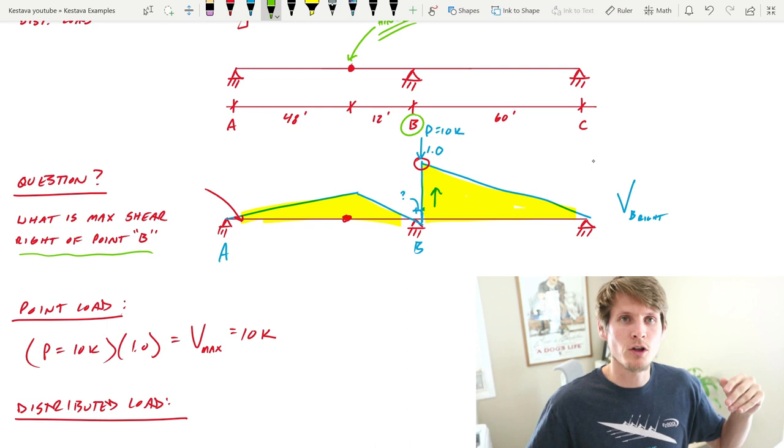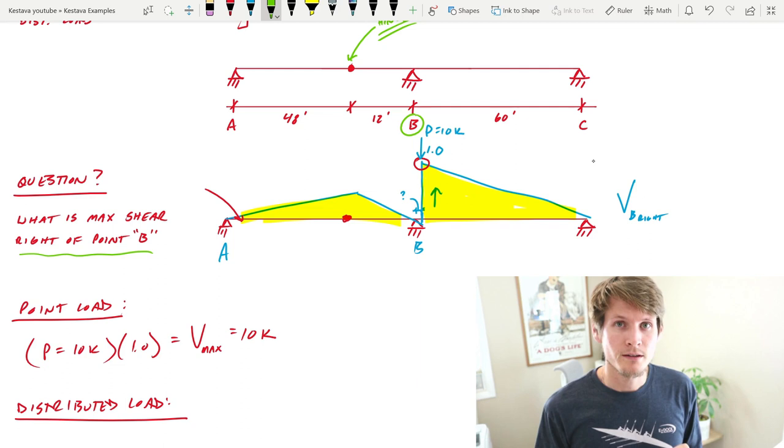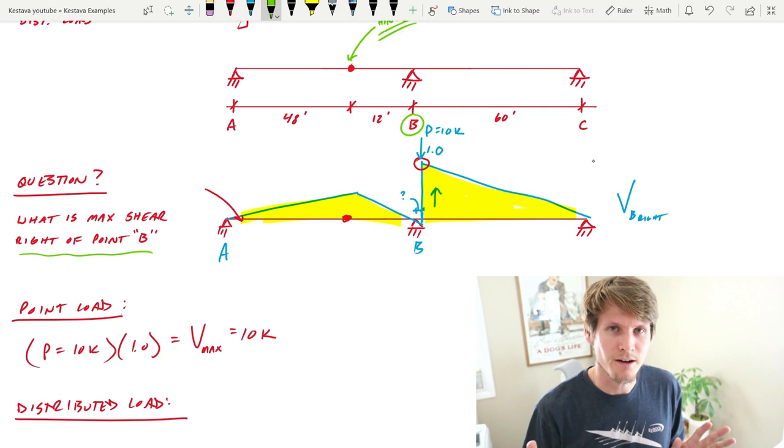That is not always the case. Especially when you have continuous members, you will see that certain bays get loaded that result in maximum shear and other bays do not get loaded. It's not just always that you have everything continuously loaded which gets you your maximum results. That is not always the case.